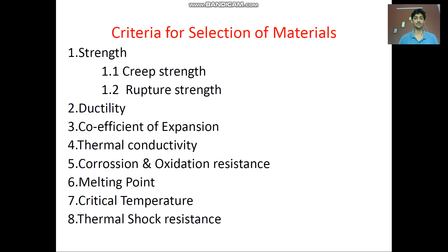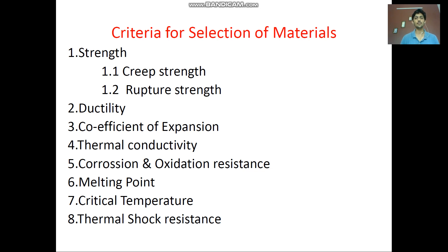Corrosion and oxidation resistance are the next criteria. In a compressor, when water and methanol mixture injection is used as a thrust augmentation method, the water injection causes corrosion and oxidation processes. This causes the compressor material to start corroding and changing its design, affecting the compressor's performance and strength. Therefore, the material selected should have good corrosion resistance and good oxidation resistance.